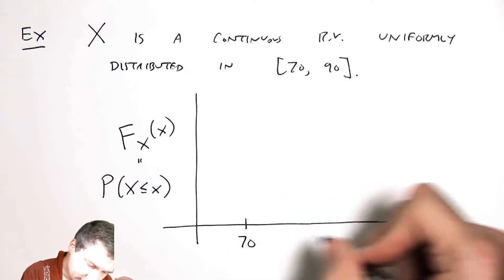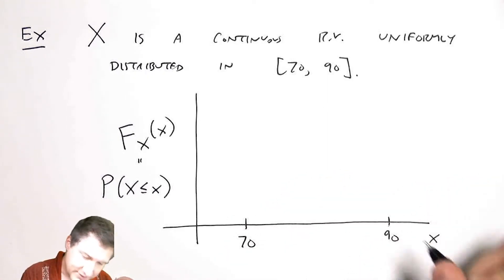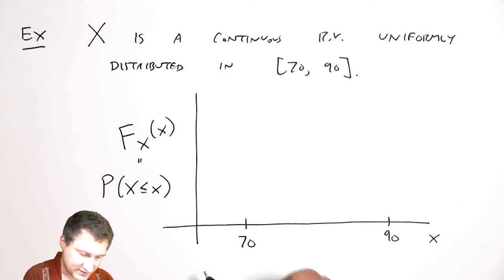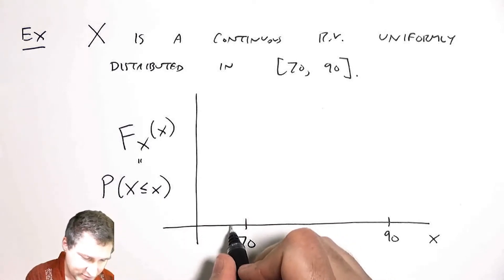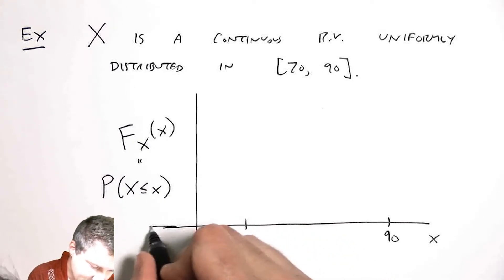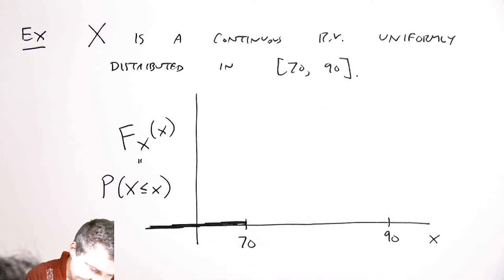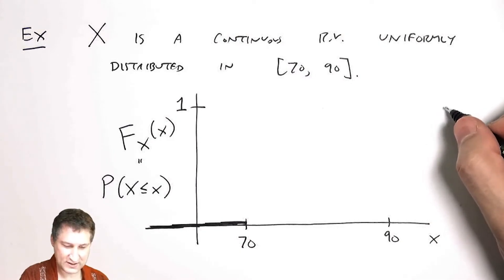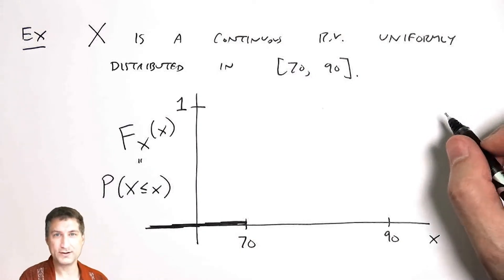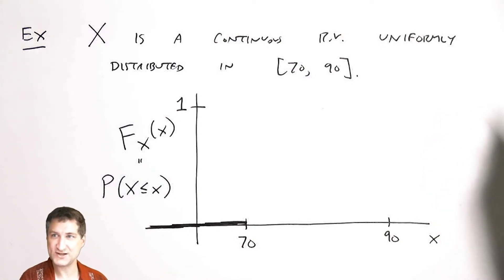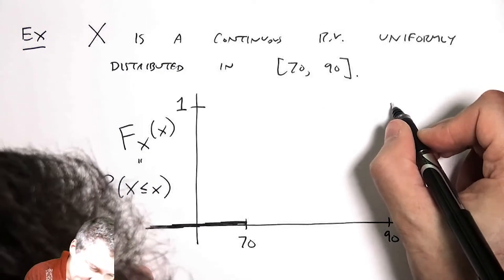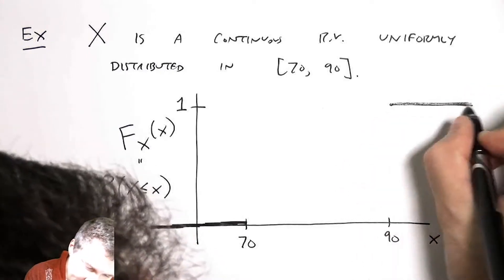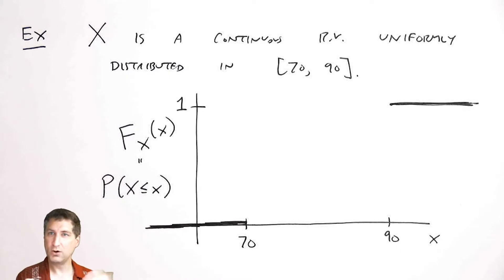Okay, so I know that class can't last less than 70 minutes. So the probability that x is less than or equal to say 68 is zero. So clearly things are zero up to 70. And then there's probability one that class is less than 94 minutes, because I know it's always at most 90 minutes. So certainly at 90, I top out at one. What happens in between?